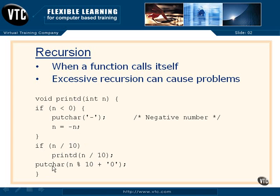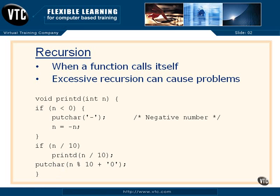When that happens, we output putchar of n modulo 10 — that's the remainder of n divided by 10 — plus a character zero. A character zero added to the actual value number will create the ASCII printable character. So we put out the printable character, and then we return from printd. If there were multiple printd calls stacked up, when we return from printd, we actually return to the next statement after the last time we called printd, and that putchar will then be performed.